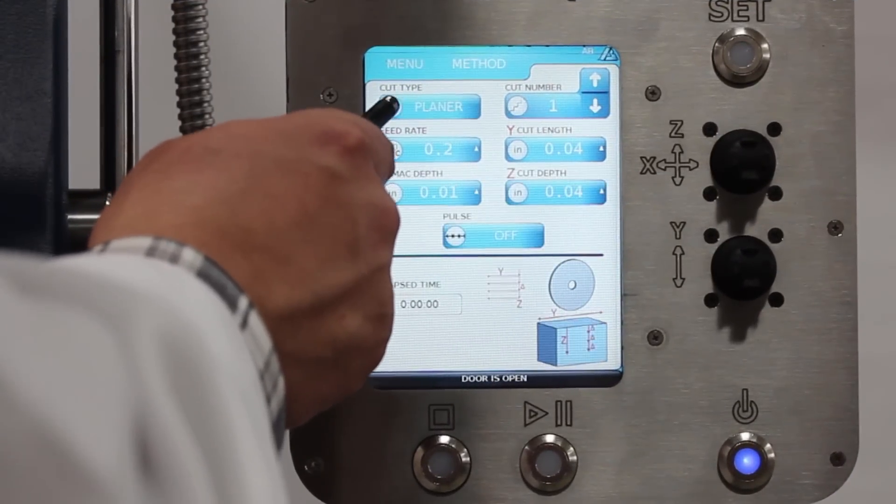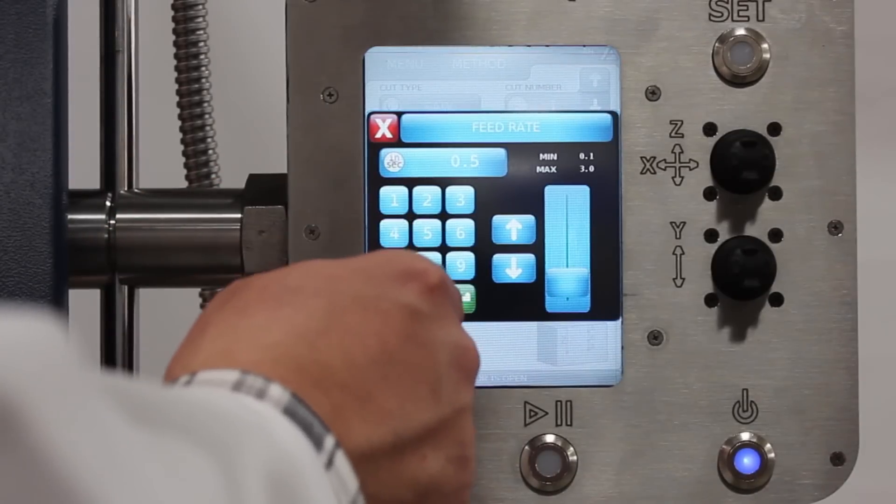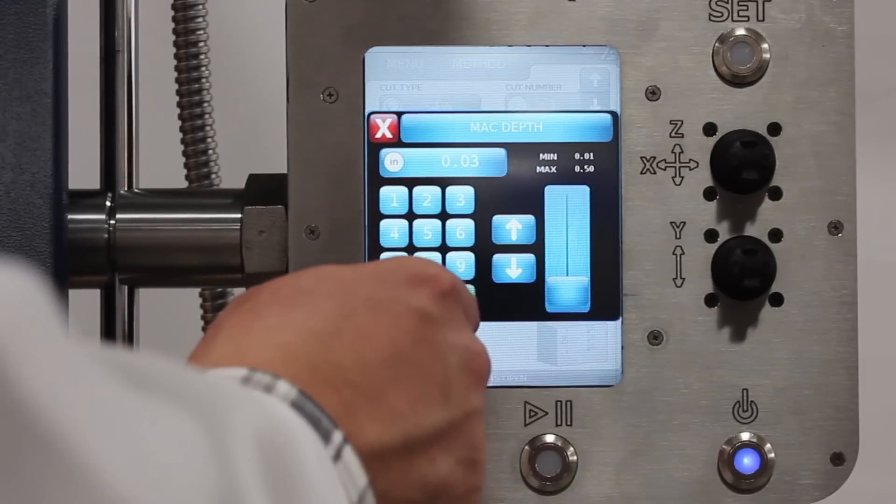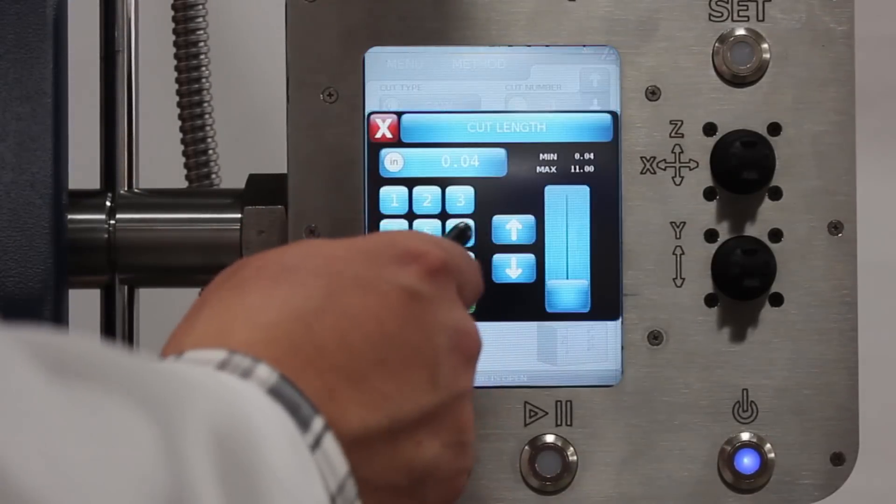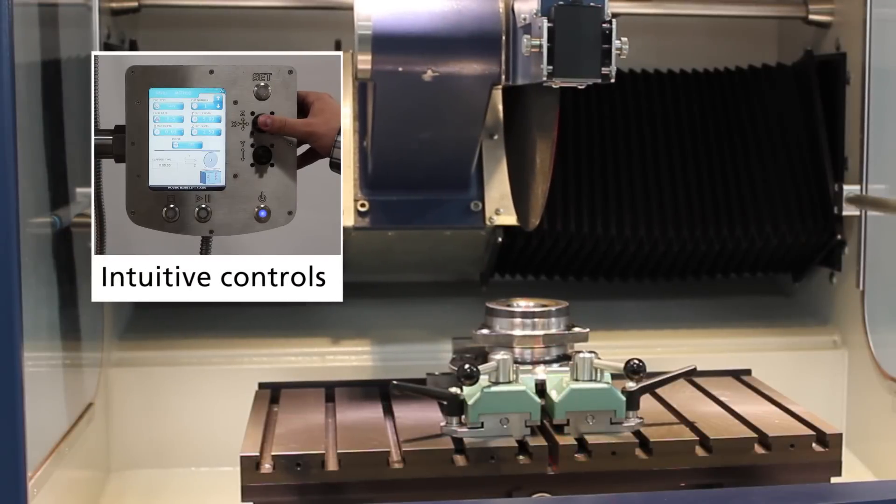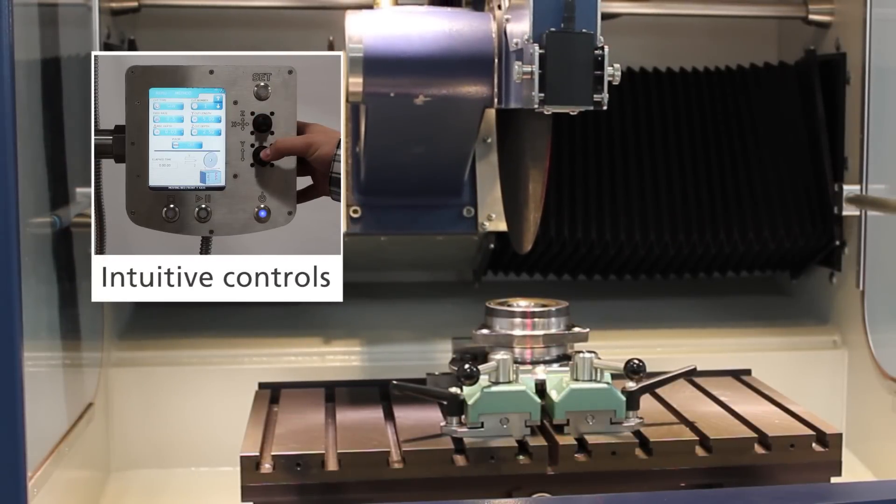Simple controls enable programming as well as recall and modification of methods. Clear fields prompt you for the required parameters and track elapsed cut time on the screen. Dual joysticks provide precise positioning of the table and wheel.